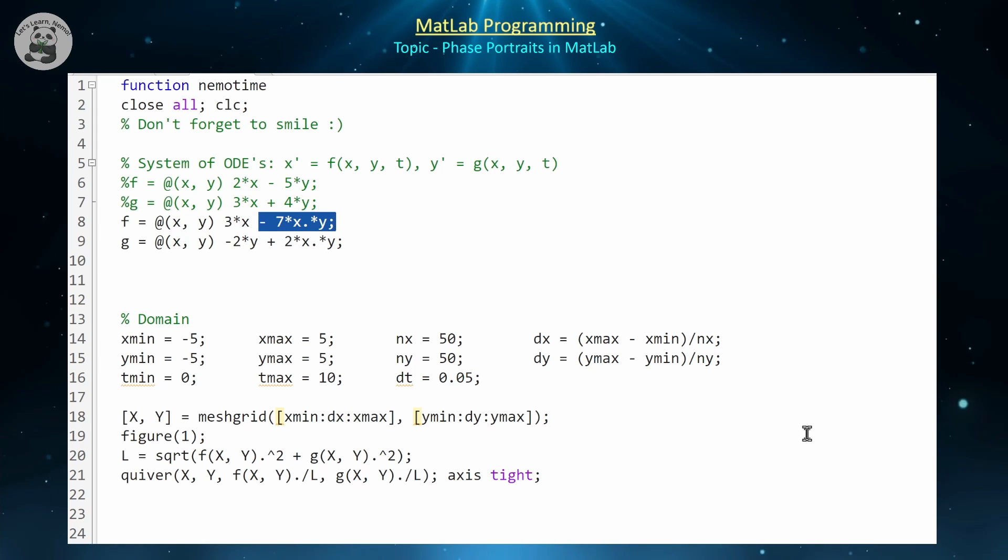For the foxes, let's assume that they have a natural death rate or emigration rate of let's say 2, and let's assume that they have a positive interaction with rabbits. Of course this is a Lotka-Volterra system because these individual growth rate parameters are opposite signs and our interaction coefficients are opposite signs as well. So x corresponds to our prey and y corresponds to our predator.